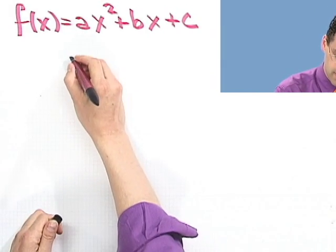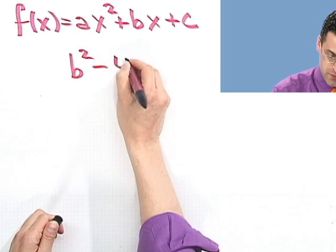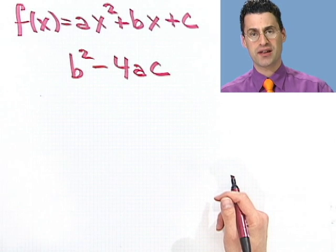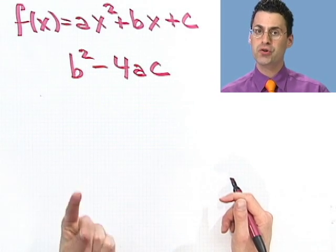So when the thing inside the square root, remember that's b squared minus 4ac, b squared minus 4ac. When that's positive, then we know we're going to have two real roots.